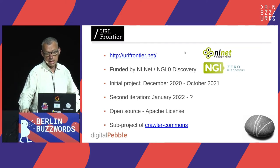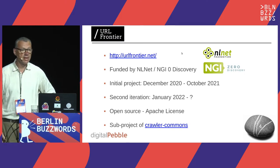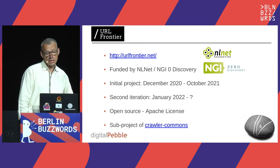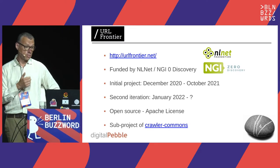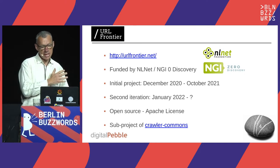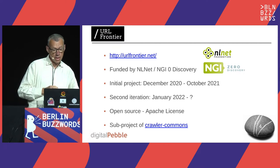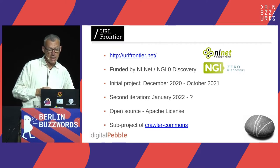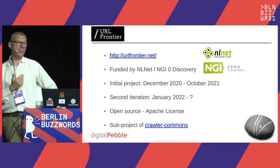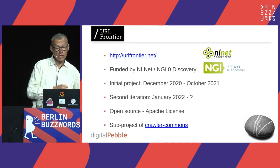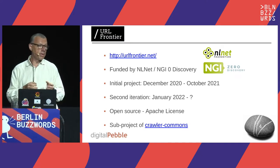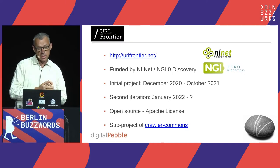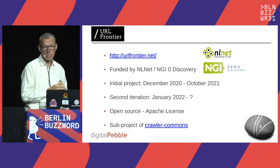URL Frontier as a project is funded by an organization called NLNet, based in the Netherlands, as part of the NGI Zero Discovery program. I was fortunate to get funding not once but twice for this work. The initial project ran last year and we're now in the second iteration. It is open source under the Apache license, and it's a sub-project of Crawler Commons — a project providing Java resources for web crawlers to do things like parsing sitemaps and robots.txt. Having URL Frontier as part of Crawler Commons made a lot of sense.